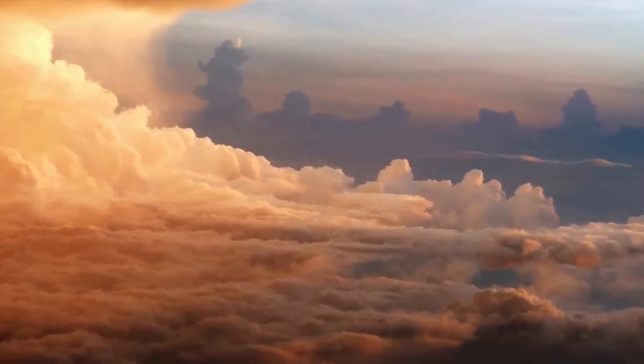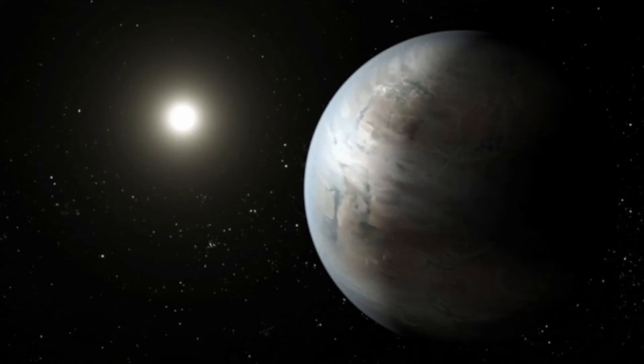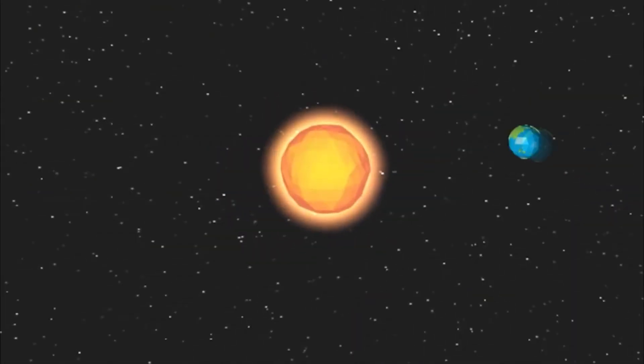Proxima Centauri is a red dwarf star, much smaller than our own Sun. Because Proxima b is so close to the star, it appears larger than the Sun from Proxima b's surface.